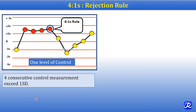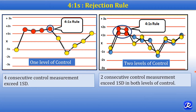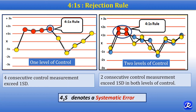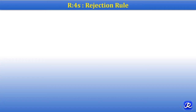The 4-1S rule is applicable for both one-level and two-level controls. When only one level of control is used, four consecutive control measurements exceeding one standard deviation on one side of the mean violates the 4-1S rule — for example, the second, third, fourth, and fifth control measurements all exceeding one standard deviation. When two levels of control are used, two consecutive measurements exceeding one standard deviation in both levels of control — two values in level 1 and two values in level 2 — constitutes a 4-1S rule violation, which is a rejection rule denoting systematic error.